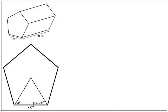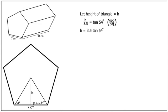Next, we drop a perpendicular from the apex of the triangle to meet the base at right angles, and that gives us two right-angled triangles. Now we're getting somewhere, because we can use a little trigonometry to find the height of the triangle. Let's call the height of this triangle h, then we can write h over 3.5 is equal to the tangent of 54 degrees. h is therefore 3.5 tan 54 degrees.